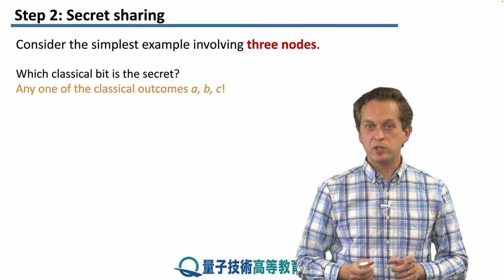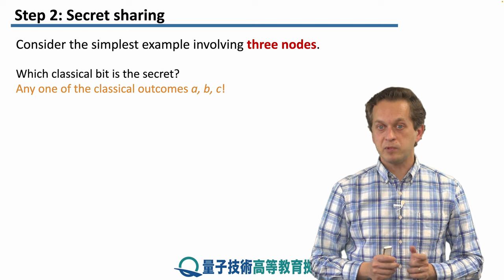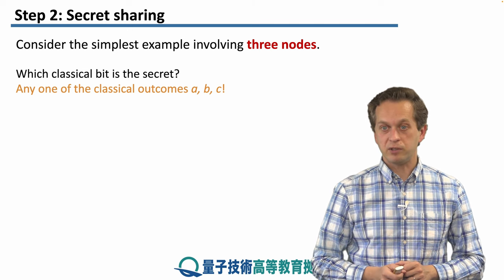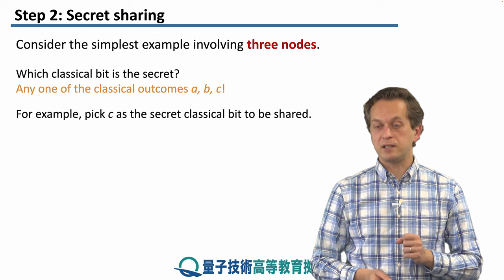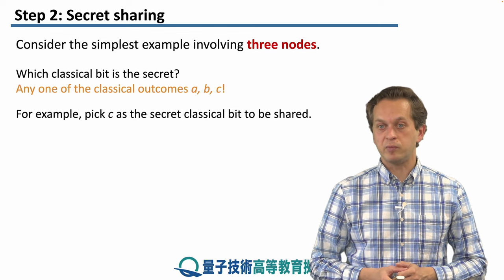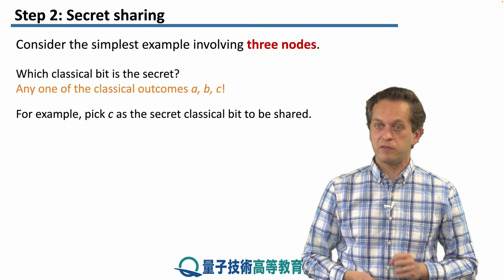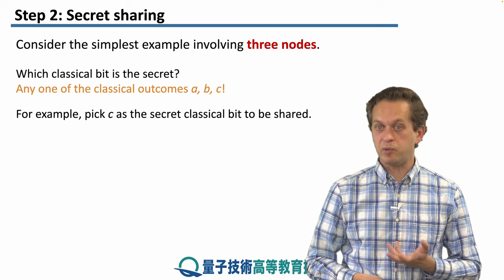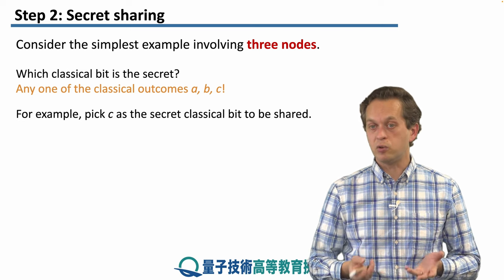So which bit is the secret? Well, it turns out that any of the classical outcomes a, b, and c can become the secret. So in our example for concreteness, we're going to pick c. Node C's outcome of the measurement in the x basis is going to be the secret. So node C knows the value of the outcome, it's either +1 or -1, but nodes B and node A don't.